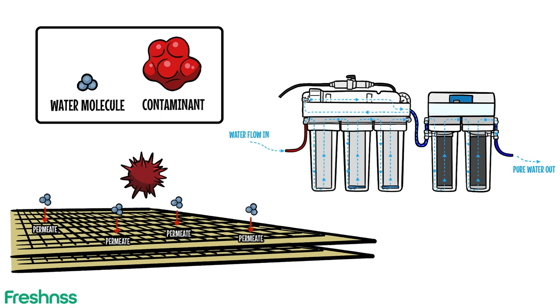The water that does not permeate the membrane sheets becomes more concentrated with contaminants. This concentrate, or reject water, is flushed clean and drained away so the process is ready to begin again.